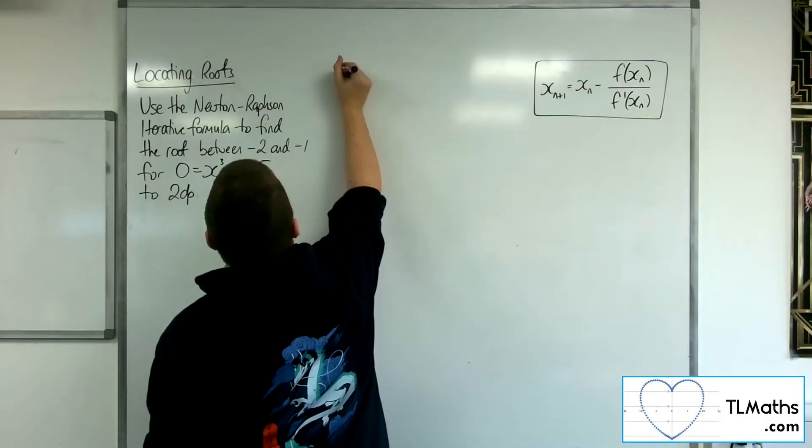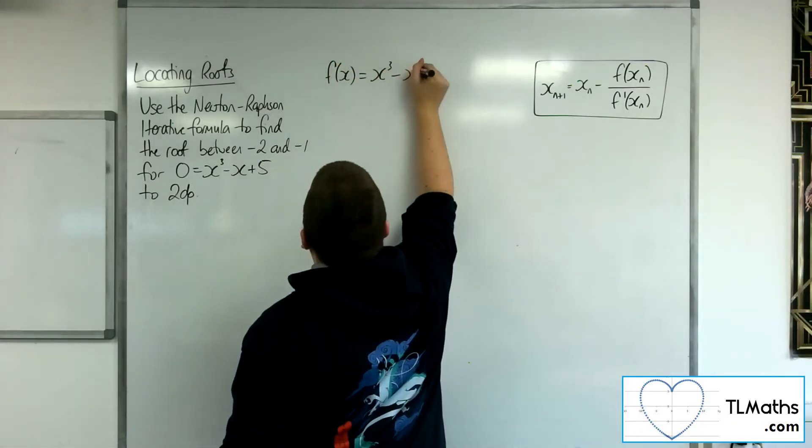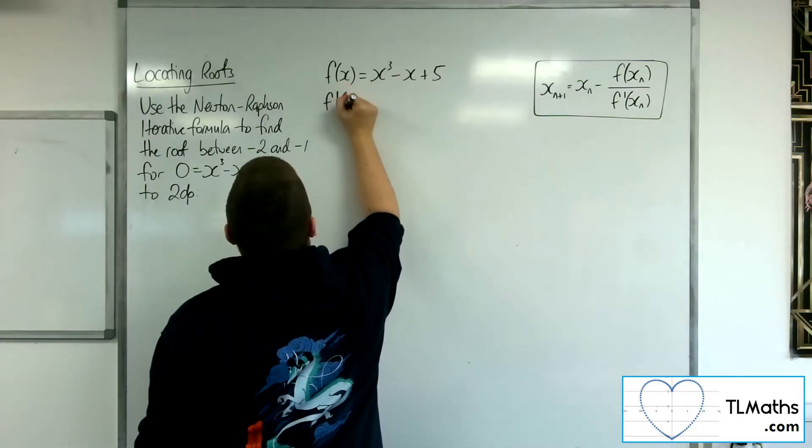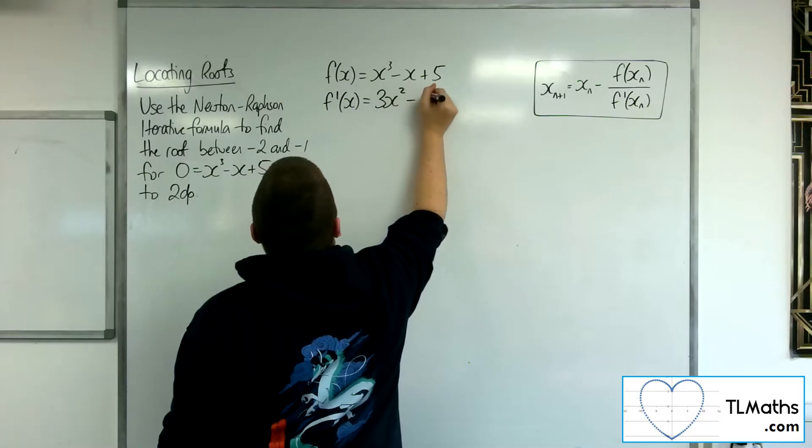So f(x) in this case is x³ - x + 5. We need to find f'(x), so we differentiate it to get 3x² - 1.